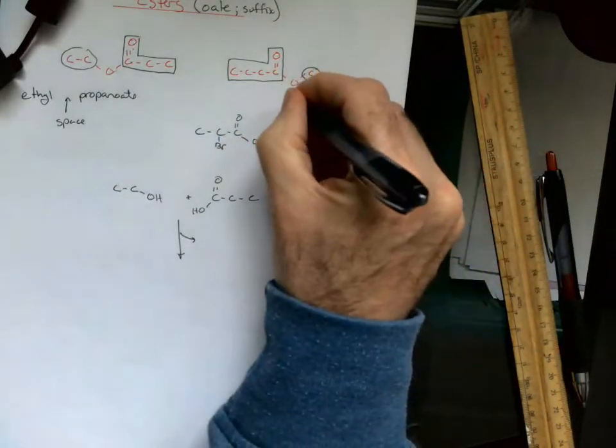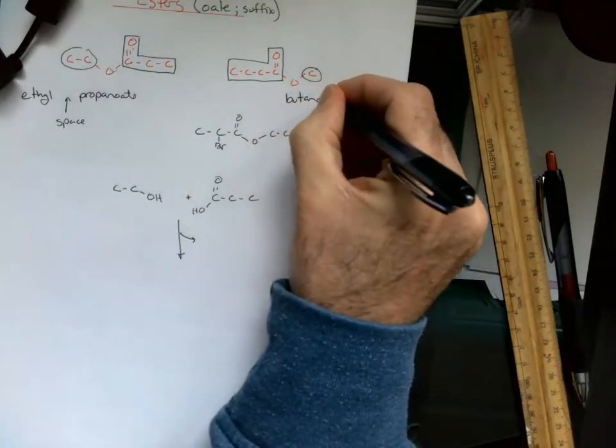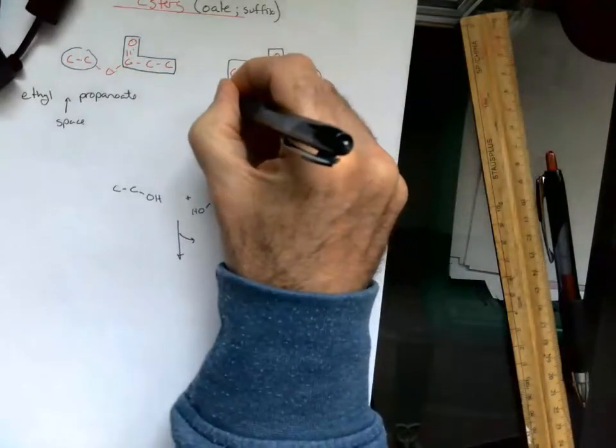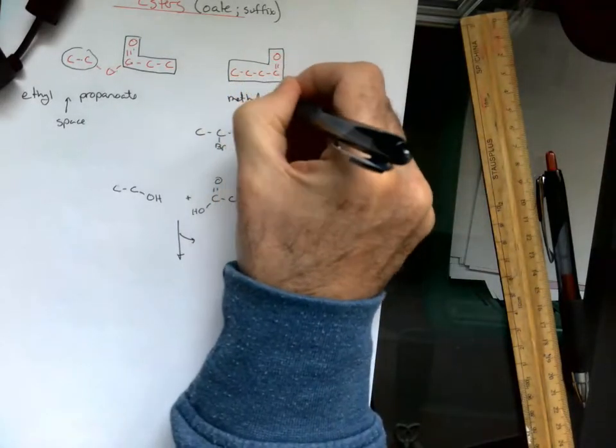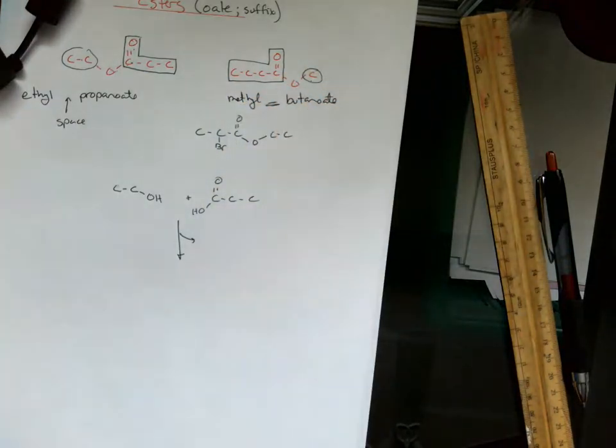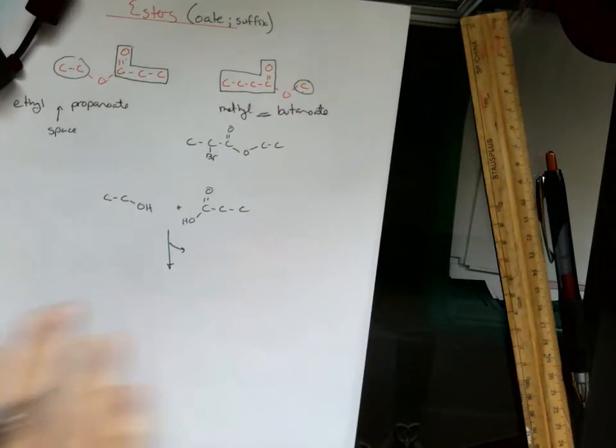double bonded to an O and name it. That's got four carbons, that's a butonoate. There's a single carbon there, that's a methyl group, and we do leave a space right there. Even though this is a really